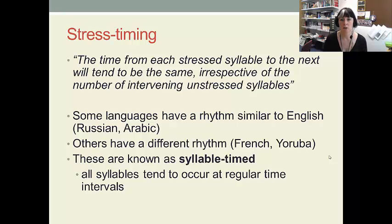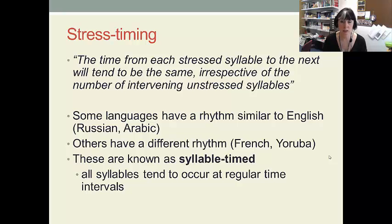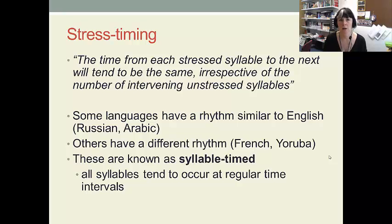Some languages have a rhythm similar to English, for example Russian and Arabic, and others have a different rhythm. So if you listen to French, Yoruba, Japanese, or Chinese, for example, they have a very different kind of speech rhythm. This rhythm is known as syllable-timed, and what this means is that all syllables tend to occur at regular time intervals, rather than all stresses tending to occur at regular time intervals.